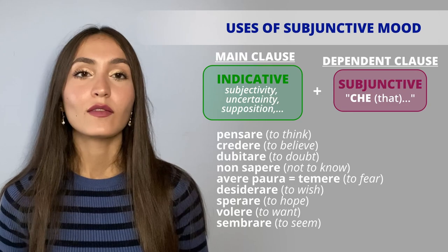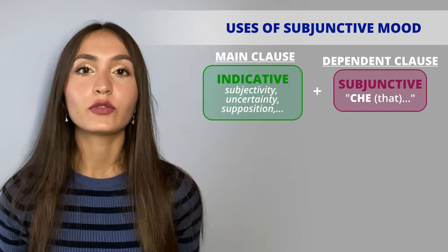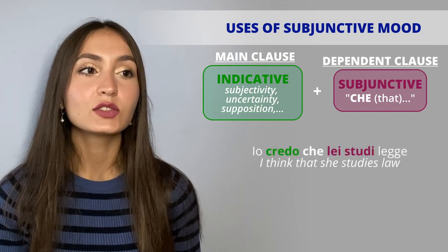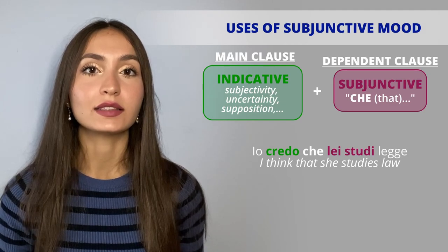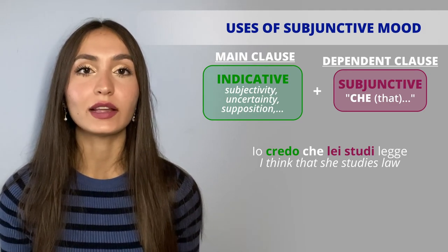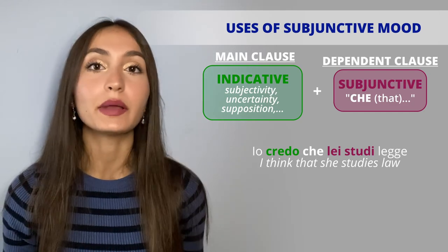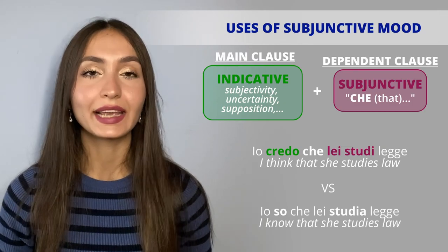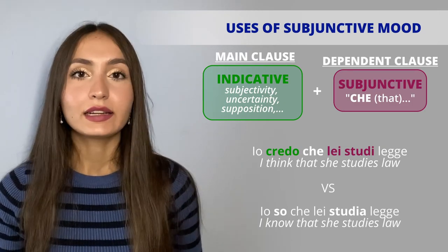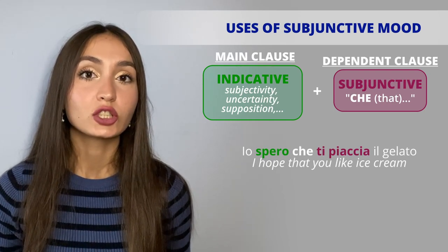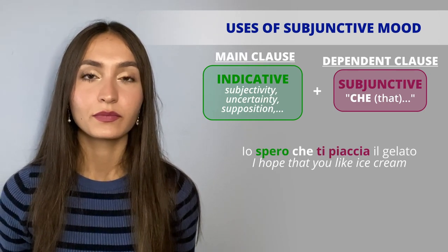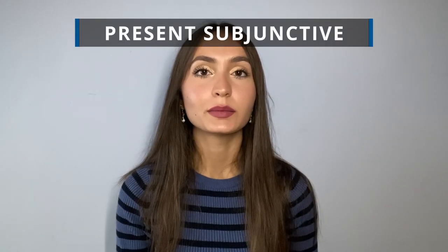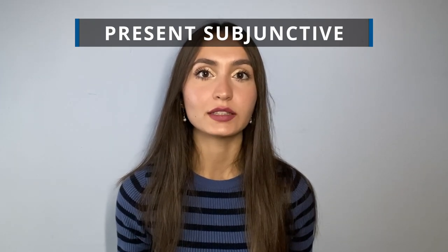Therefore our typical example would be: 'io credo che lei studi legge.' A clause with certainty will have a different verb in the main clause, like 'sapere,' so that sentence becomes: 'io so che lei studia legge.' Another example: 'io spero che ti piaccia il gelato,' or with certainty: 'io so che ti piace il gelato.'